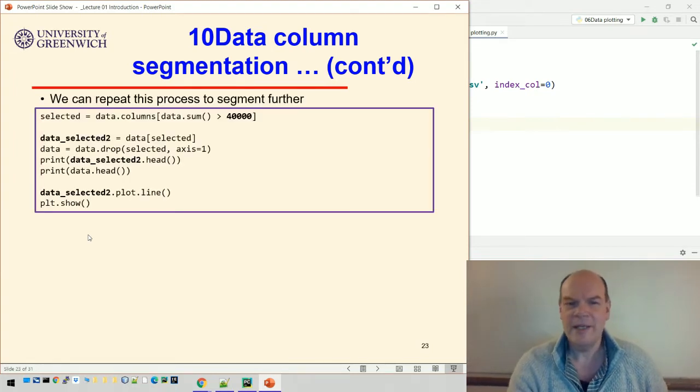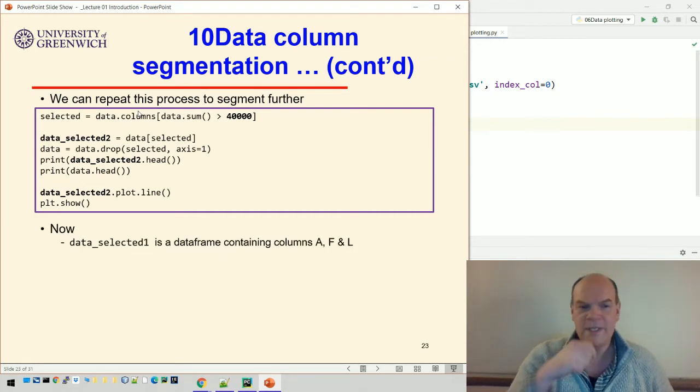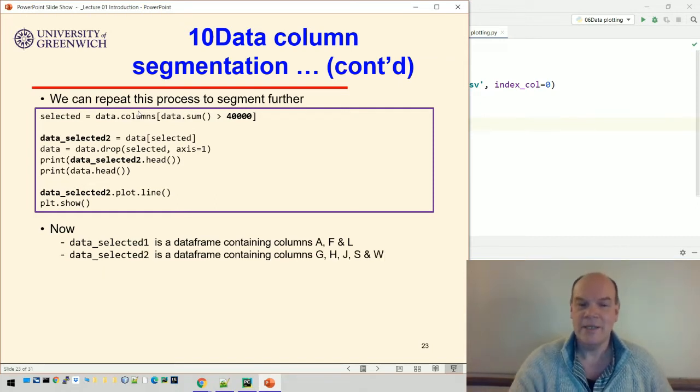And we can repeat that process to go further. So here we've got data_selected_2, which is everything over now over 40,000, but we've taken out everything over 100,000. So this is everything between 40,000 and 100,000 sales over the total sales over the year.